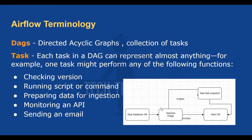So this is our basic flow. The second task — machine image — if it fails, it goes for a snapshot; if it succeeds, it goes for starting the VM. The snapshot task is only executed in case of failure of the machine image task. We'll go to the cloud console and create a DAG for this same scenario.